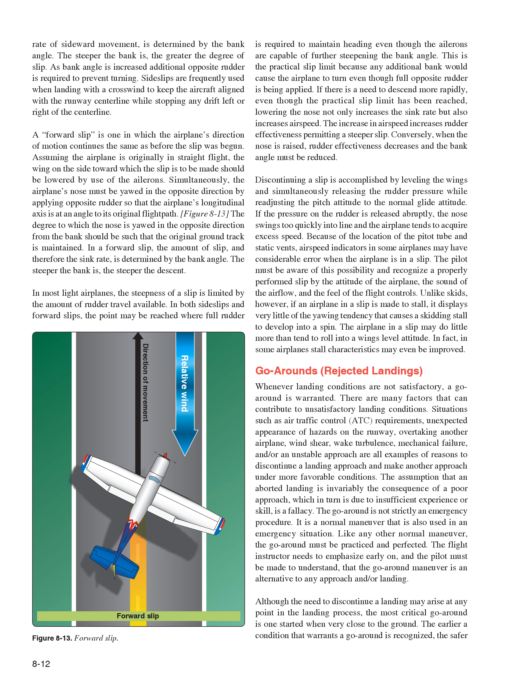In both sideslips and forward slips, the point may be reached where full rudder is required to maintain heading even though the ailerons are capable of further steepening the bank angle—this is the practical slip limit. Any additional bank would cause the airplane to turn even though full opposite rudder is applied. If there is a need to descend more rapidly even though the practical slip limit has been reached, lowering the nose increases both sink rate and airspeed. The increase in airspeed increases rudder effectiveness, permitting a steeper slip. Conversely, when the nose is raised, rudder effectiveness decreases and the bank angle must be reduced. Discontinuing a slip is accomplished by leveling the wings and simultaneously releasing rudder pressure while readjusting the pitch attitude to the normal glide attitude.